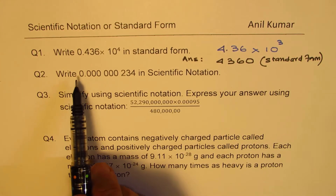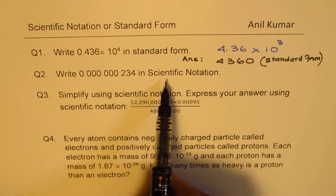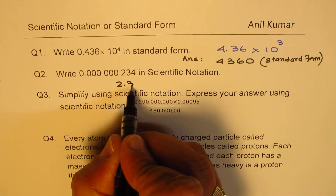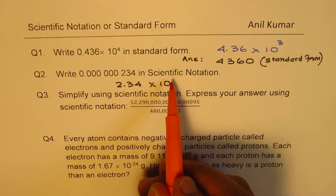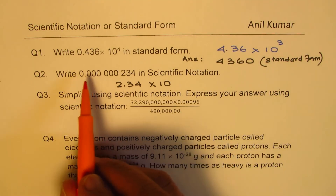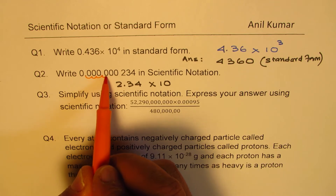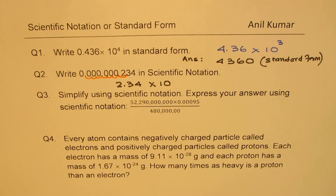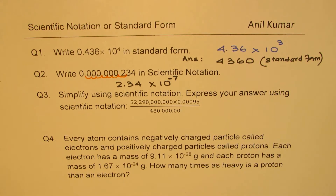Question number two: 0.000000234 in scientific notation. Here you can see the advantage of using scientific notation. We write this number as 2.34 × 10 to the power of what? The number is small, so the exponent is going to be negative. Counting the decimal places, we move 1, 2, 3, 4, 5, 6, 7 places to the right. Since we are moving 7 places to the right, it will be 2.34 × 10⁻⁷. So that becomes our answer.